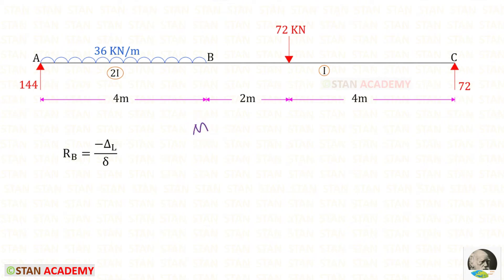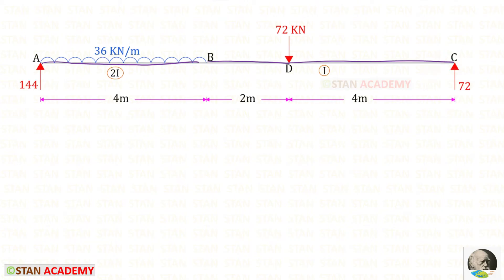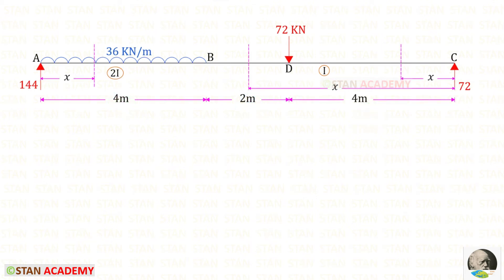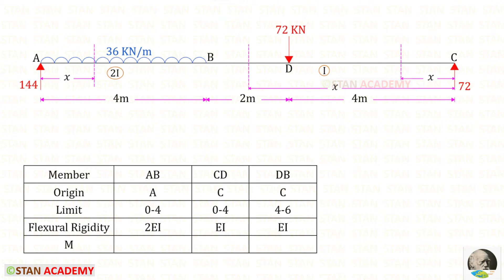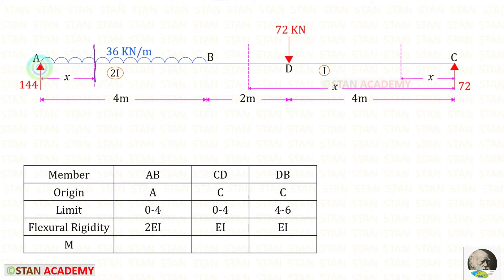Using the loads in the beam we find capital M. We make sections in the beam — keeping a point D — giving three different parts: AB, BD, and DC. We make three sections: one in AB at distance x from A, one in BD at distance x from C, and one in DC at distance x from C. Now let us make a table with three members: AB, CE-D, and DB.